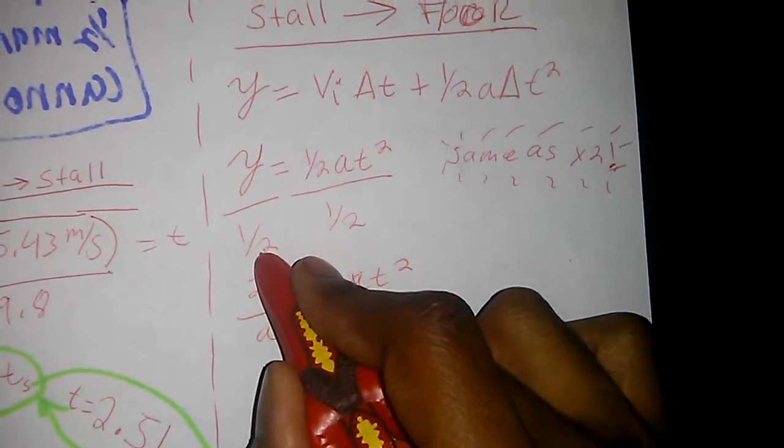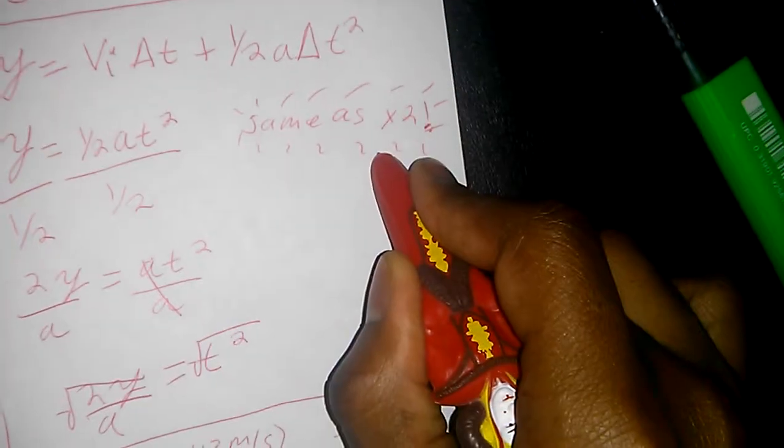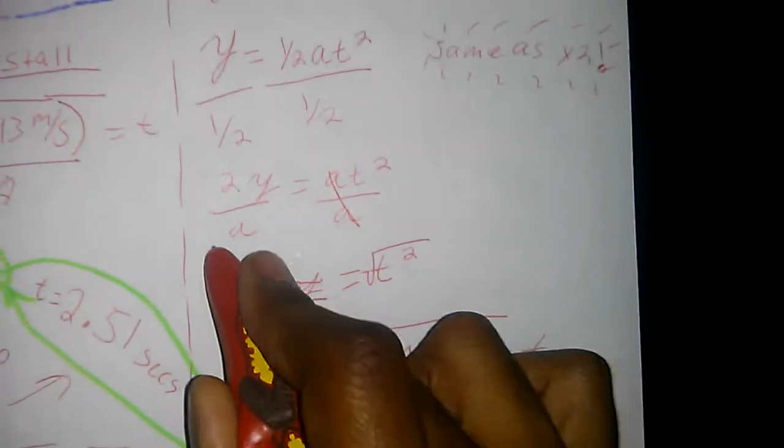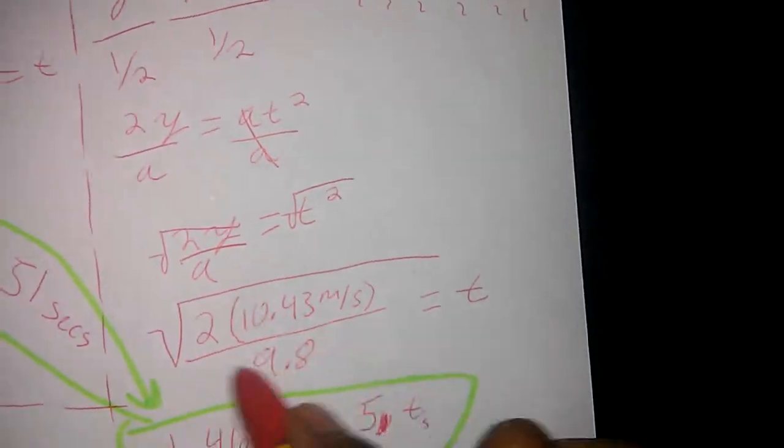Now when you divide half, it's the same thing as multiplying times 2. So now you're going to have 2y equals at squared. Go ahead and solve that.